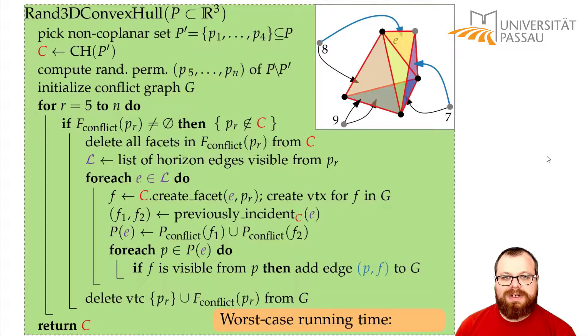What is the running time of this algorithm? Well, let's have a look. We have a for loop here that goes through n vertices. We have a for each loop here for all the horizon edges. That can also be a linear number of edges. And then we have a for each loop here that goes through all the conflicts of this edge.